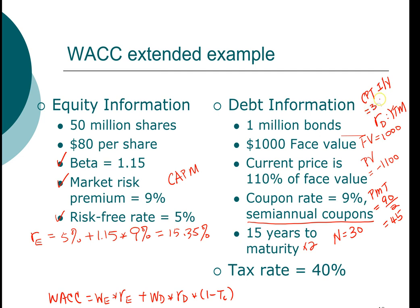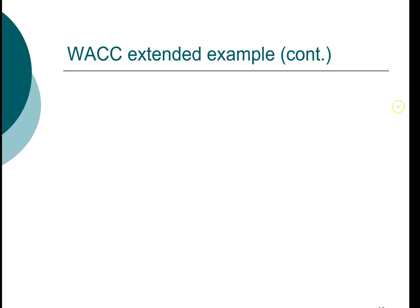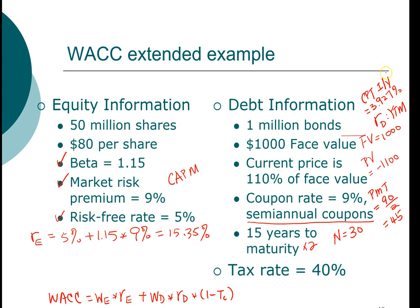When we compute the yield for this bond, it turns out the interest rate is 3.97 percent every six months. Since we need the yield to maturity per year, we multiply this number by 2, giving us a yield to maturity of 7.854 percent.